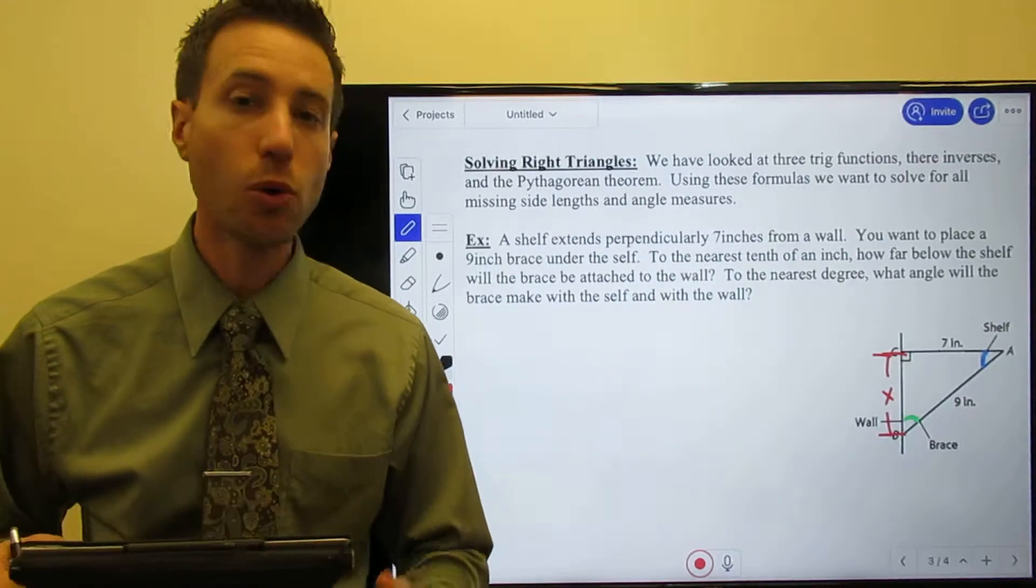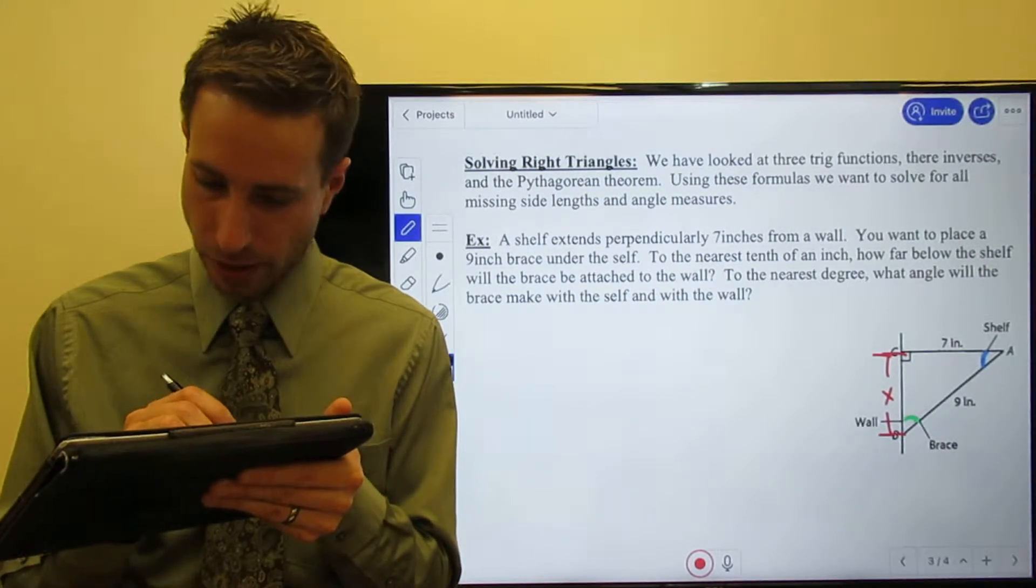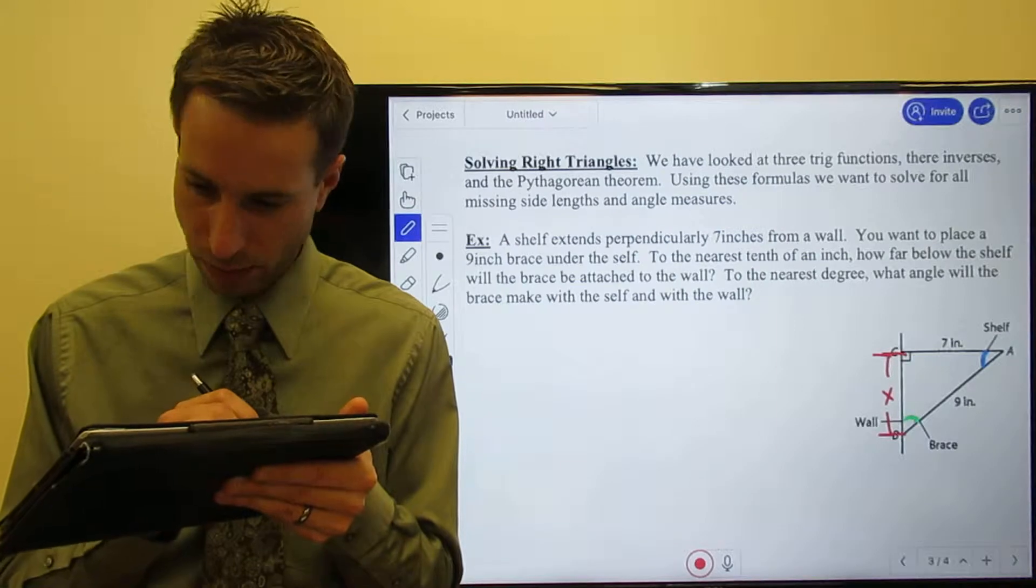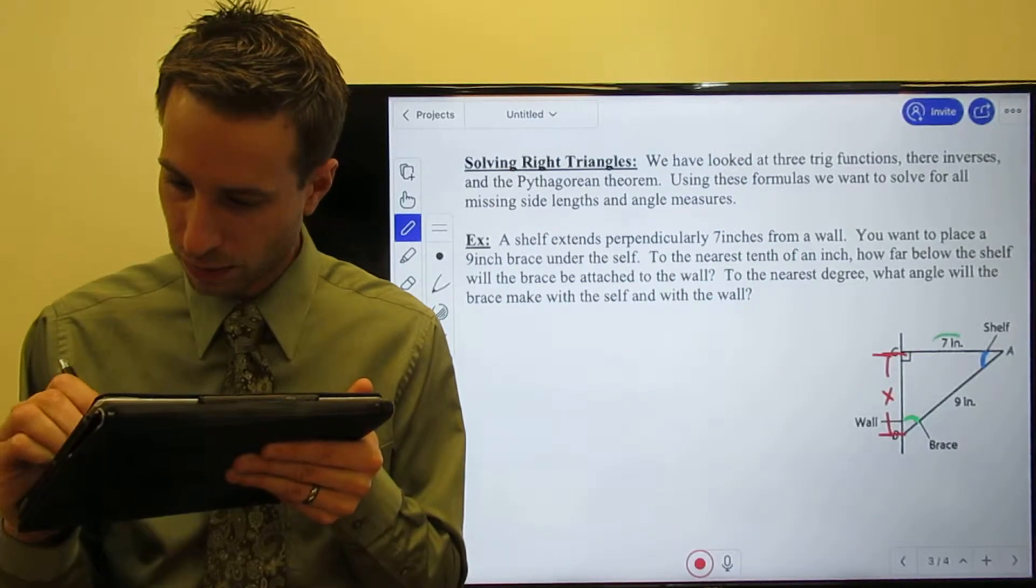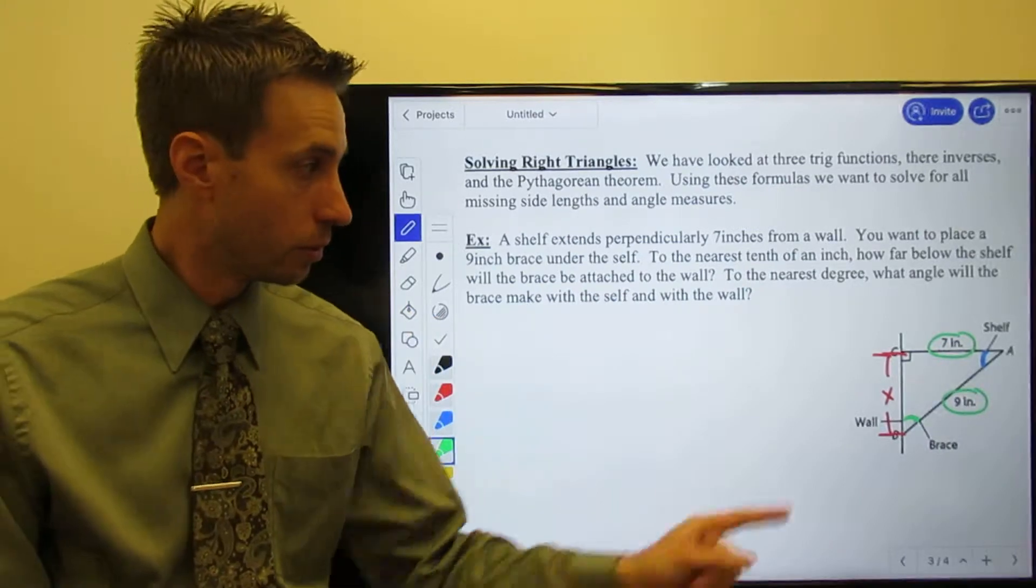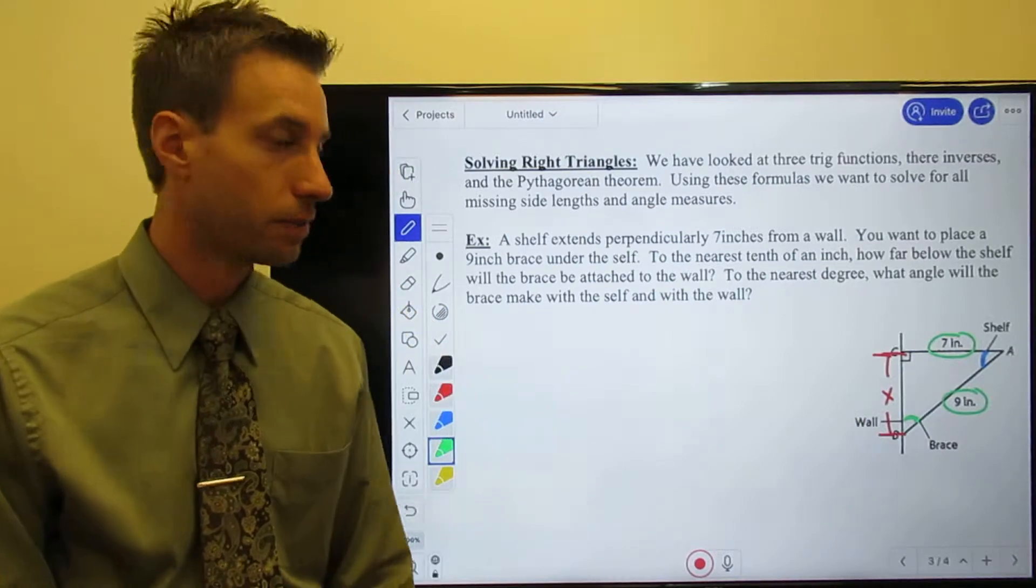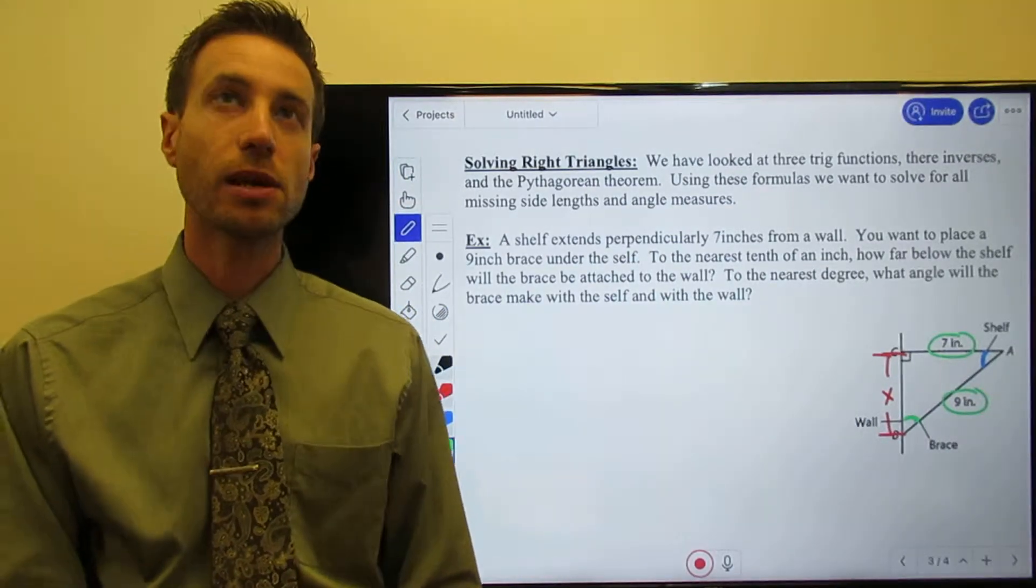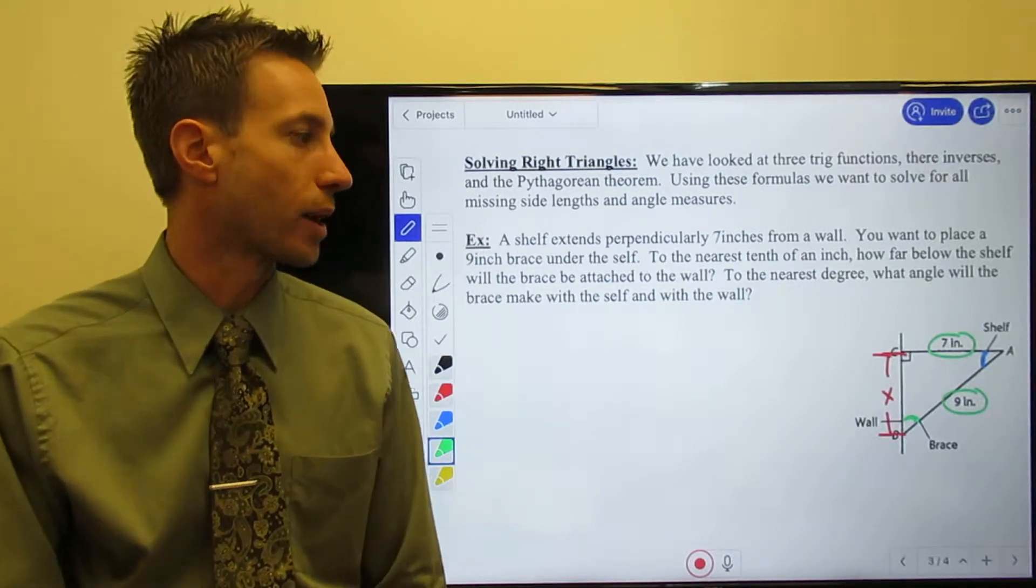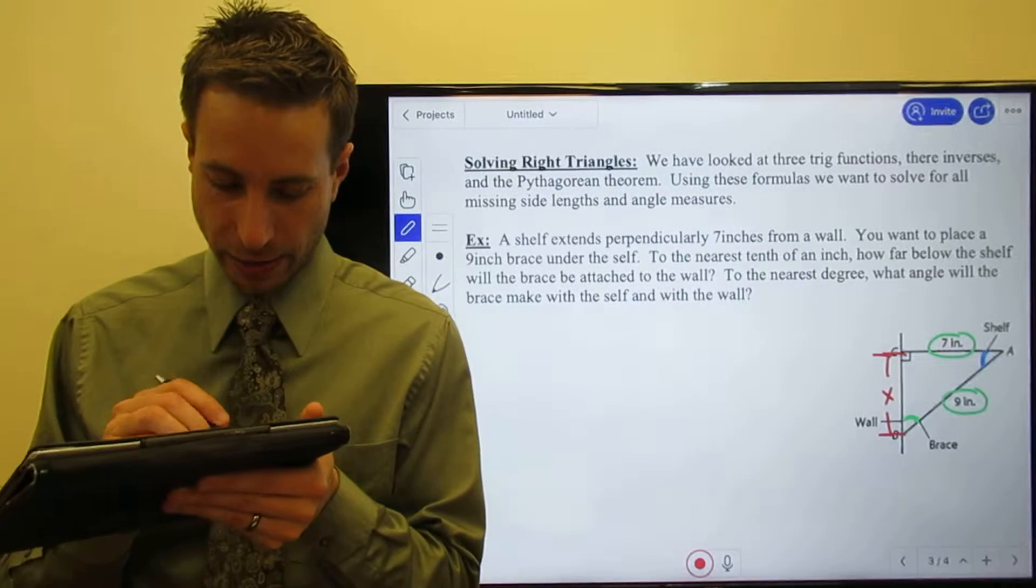Oh look at this, I know two of the three sides of a right triangle. Gee, if only someone had written a theorem that could help us find the third side of a right triangle when you know the other two. Oh that's right, Pythagorean did.